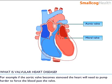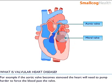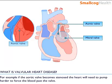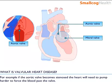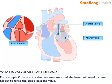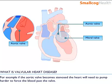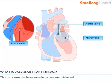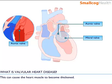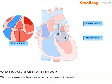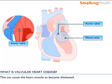For example, if the aortic valve becomes stenosed, the heart will need to pump harder to force the blood past the valve. This can cause the heart muscle to become thickened.